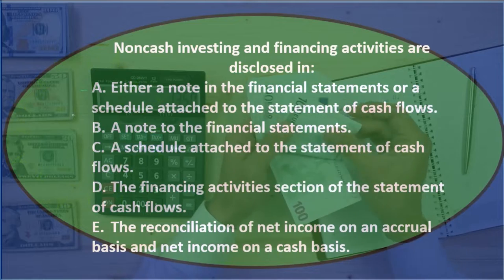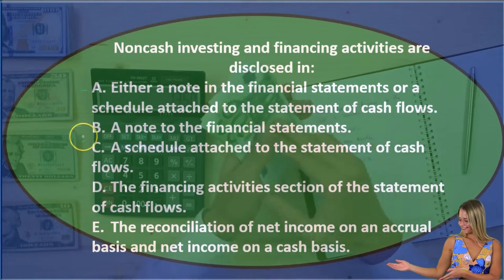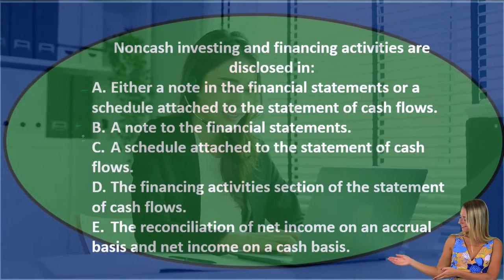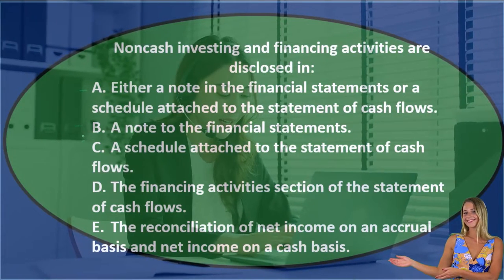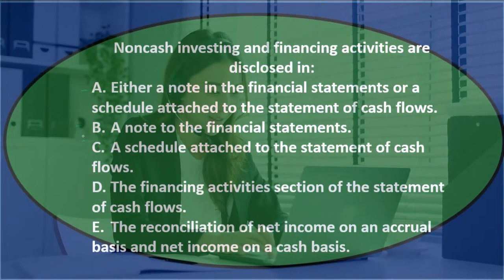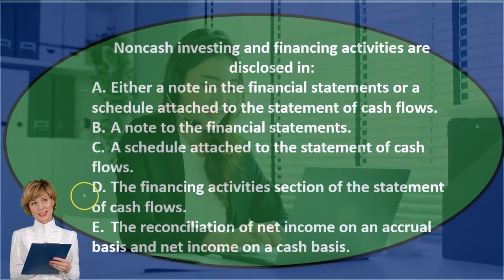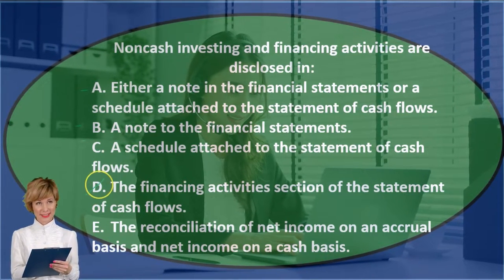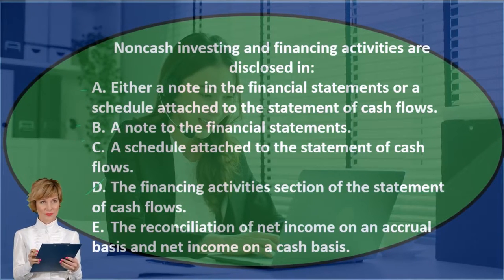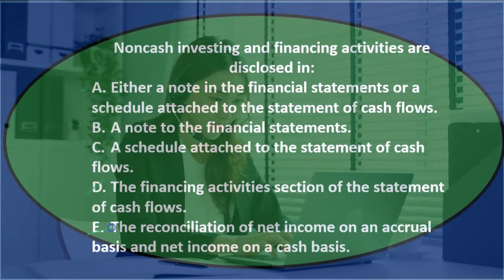Option A has both a note and a schedule, while B and C list them separately, so those three are similar and worth keeping. Option D is not correct because non-cash activities aren't just in the financing section — they're typically a combination of financing and investing together. Option E refers to the operating section under the indirect method, which does not list non-cash items, so it's eliminated.